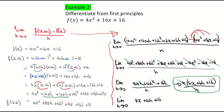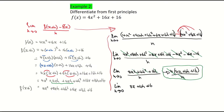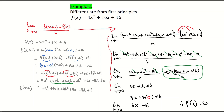You can see there is still an h left in the expression: 8x plus 4h plus 16. This is when we apply the limit as h approaches 0. Substituting 0 for h, 4 times 0 is 0, so I'm left with 8x plus 16. And that is the final answer — that's the result of differentiating from first principles. Another way of writing that is f prime of x equals 8x plus 16.